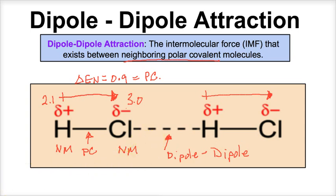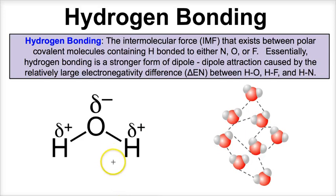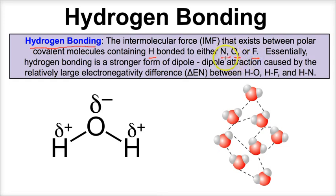Let's take a look at the third type: hydrogen bonding. This is going to be the strongest IMF in this video. Hydrogen bonding is essentially the same thing as dipole-dipole attraction, only stronger. It occurs whenever you have polar covalent molecules that have hydrogen bonded to either nitrogen, oxygen, or fluorine. Whenever you have molecules bonded to nitrogen, oxygen, or fluorine, you will have hydrogen bonding. Note that 'bonding' is a misnomer here — there is no actual chemical bond taking place. It's an intermolecular force, not a chemical bond, but it is a fairly strong one.